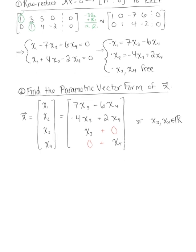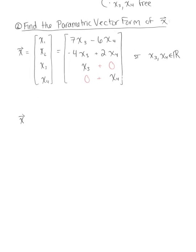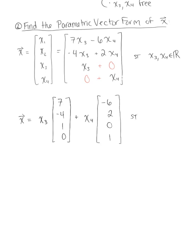We can rewrite our final answer: vector x equals the linear combination x sub 3 multiplied by the column vector (7, negative 4, 1, 0), plus x sub 4 multiplied by the column vector (negative 6, 2, 0, 1), where x sub 3 and x sub 4 are any scalars. This is the general solution to our set.